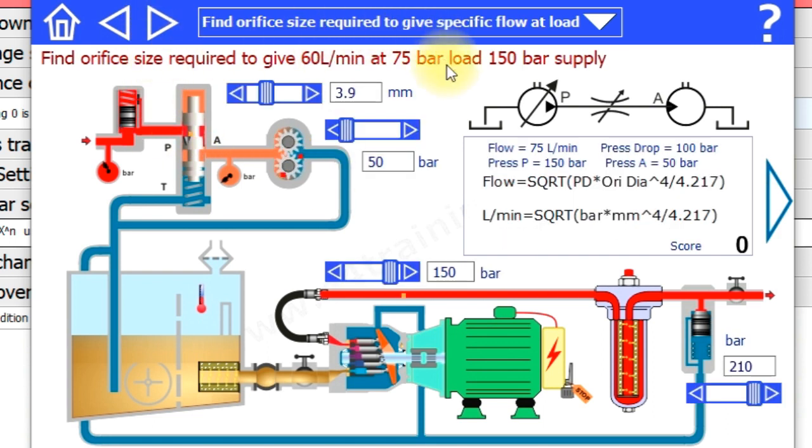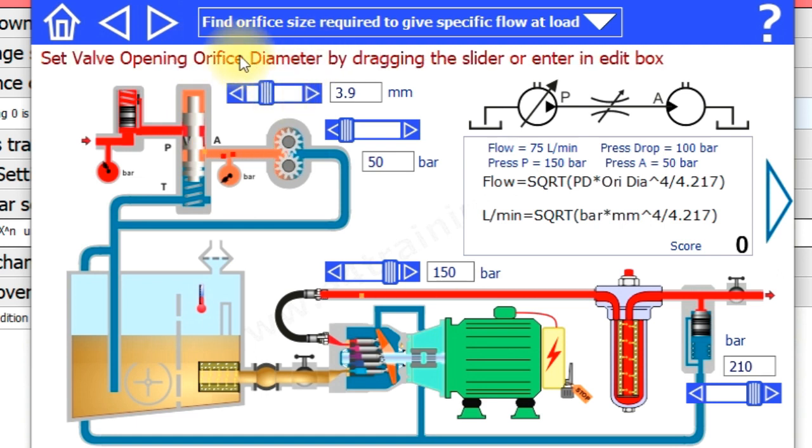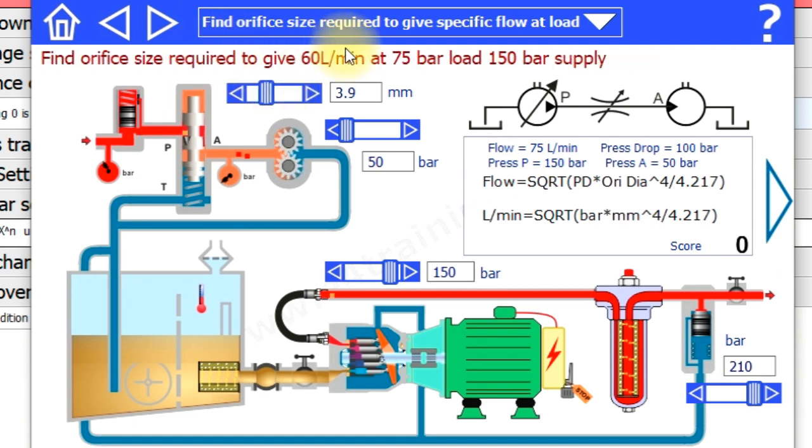This exercise means you need to find the orifice size valve orifice size to give you 60 litres a minute at 75 bar. You can set the conditions up here to find out what it is or do the calculations yourself.